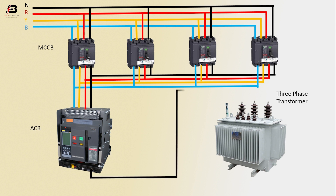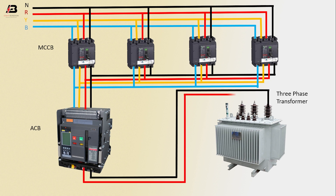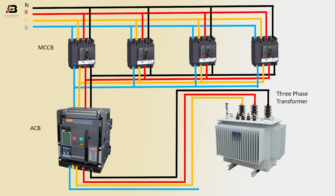Output neutral connection from ACB to connect 3-phase transformer. Output phase connection from ACB to connect 3-phase transformer. Another phase connection from ACB to connect 3-phase transformer. Third phase connection from ACB to connect 3-phase transformer. Now this circuit is ready for you.